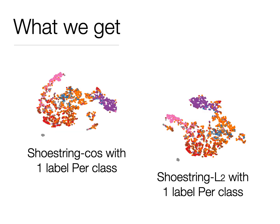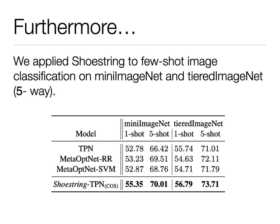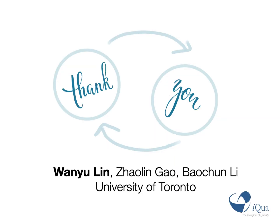This is what we get. We can cluster more compactly. We also applied ShoeStream to few-shot image classification, and it leads to the best performance as compared to our baseline methods. Thank you.